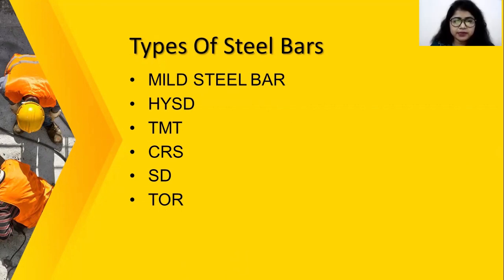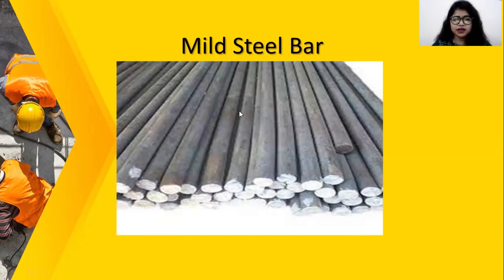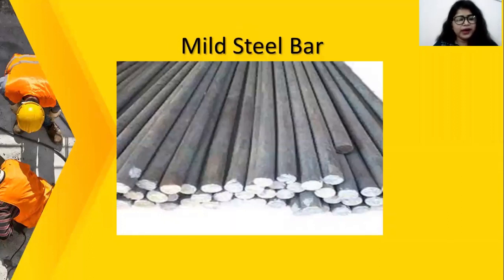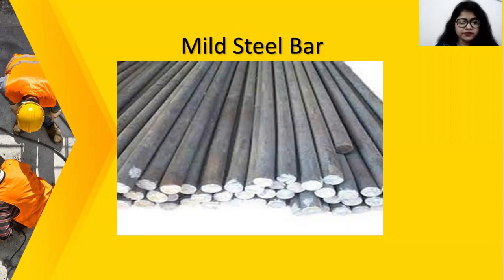We will discuss each steel bar one by one in detail. Let's move into the mild steel bar. In this figure, you can see these are the mild steel bars which have no ribs on the surface. The mild steel bar is generally a poor steel grade basically used for smelting, alloying, and manufacturing and fabrication of various structures.